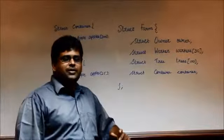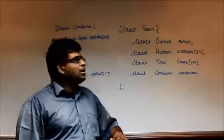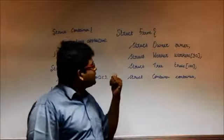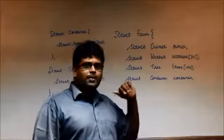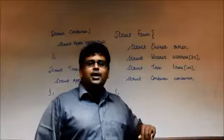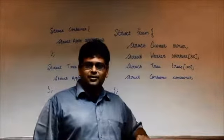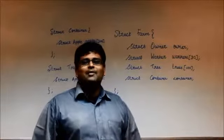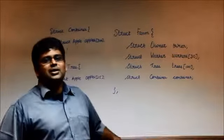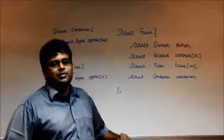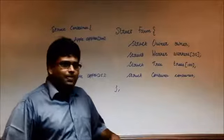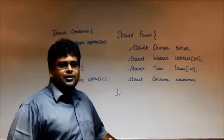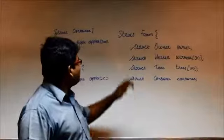We have seen various entities in this puzzle. We have a farm and the farm has an owner. The farm has a collection of trees, and each tree will have apples. And we have a set of workers who will perform the job. We have to model this same thing in C programming language.